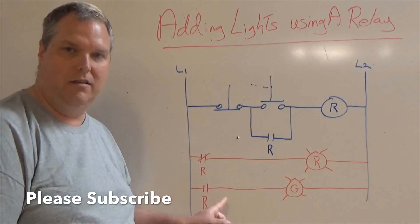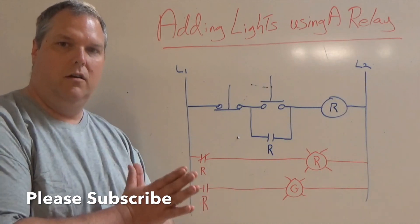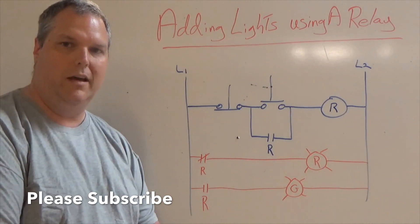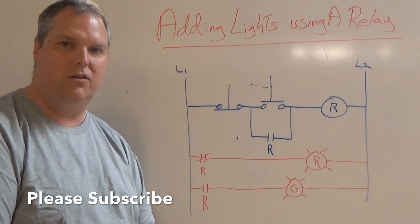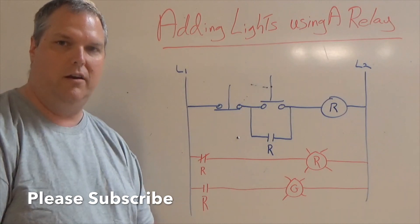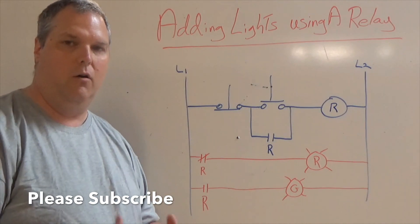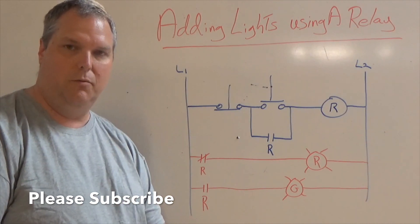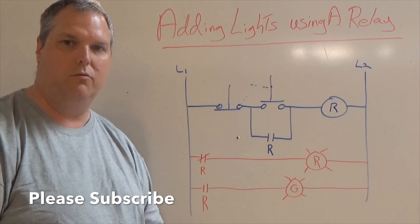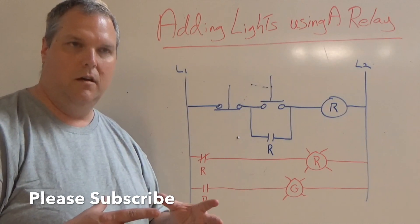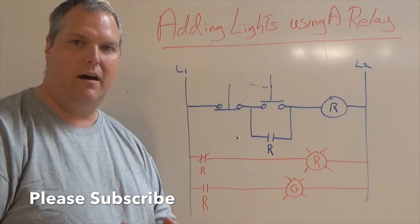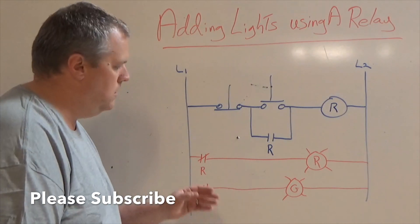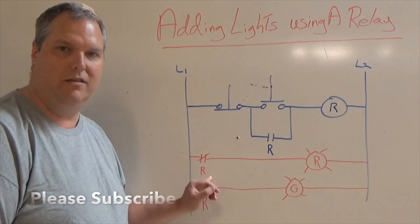They're basically connected through, because remember, this is basically a single pole switch. So we have power going in, and whichever side we decide to turn on, that's what's going to energize our light. I always say, take one wire at a time and think about everything as a single pole switch and a light. If you keep that in perspective, motor controls is very easy.